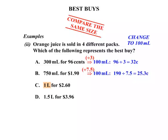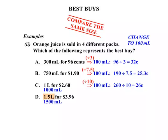The next one is 1L, which is 1000ml. To break that down to 100ml we divide by 10. The price is $2.60, so that's 260 cents divided by 10, which works out to be 26 cents. Finally, 1.5L is 1500ml. To break 1500ml down to 100ml we divide by 15. The price is 396 cents divided by 15, giving us 26.4 cents.